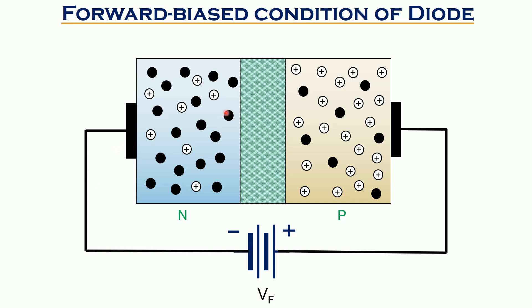However, we are already aware that at zero biased condition a potential barrier is generated across the depletion region of the diode, which we can see here with the green portion.